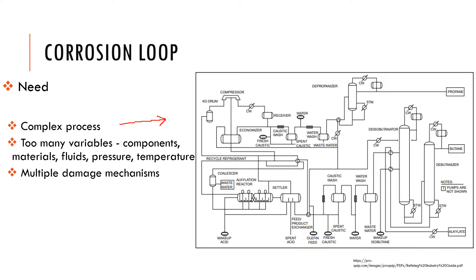If you can see from the figure, there are several components. For each component there will be multiple fluids flowing, such as caustic, water, fresh caustic, and olefin. Just looking at the picture, you can see the sheer number of components, fluids, pressure, and temperatures that the entire process may be going through.